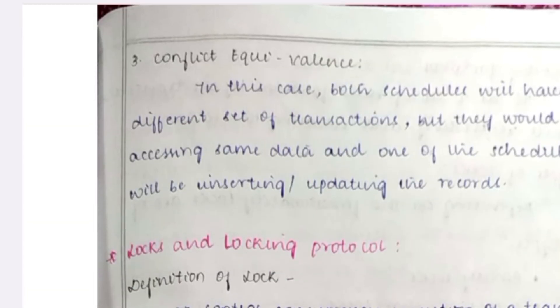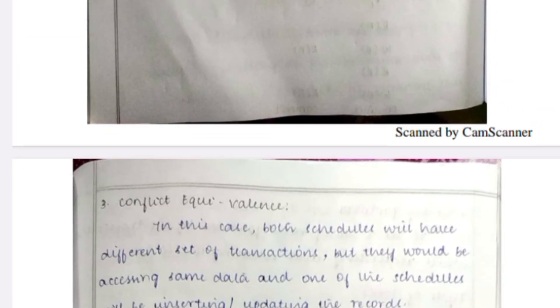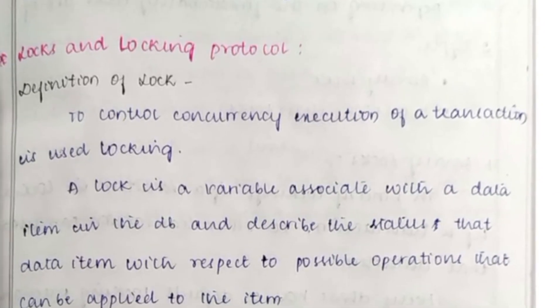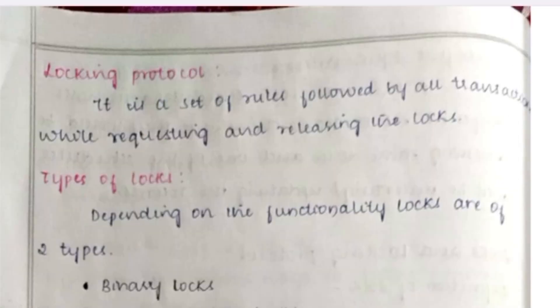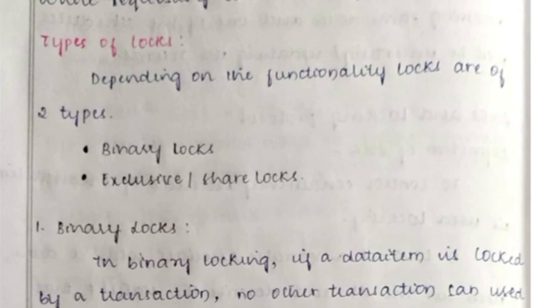Next, we discuss lock and locking protocols. A lock is used to control the concurrent execution of transactions — this is known as the locking system. There are two types: binary locks and exclusive/shared locks. In binary locking, if a data item is locked by a transaction, no other transaction can use that data item. The states are: locked (1) or unlocked (0).